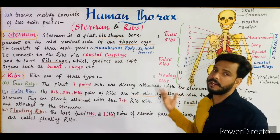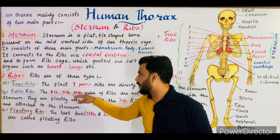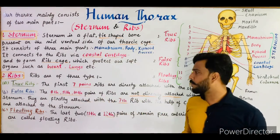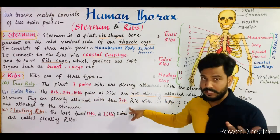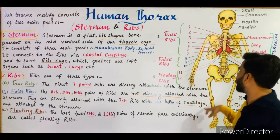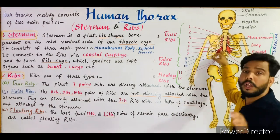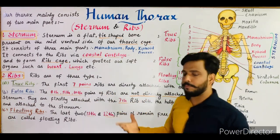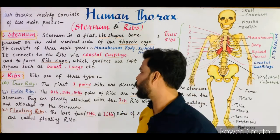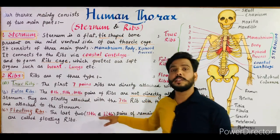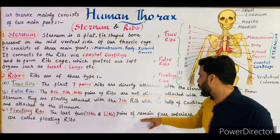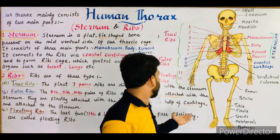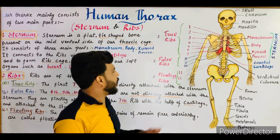To summarize: true ribs — the first seven pairs are directly attached with the sternum. False ribs — the eighth, ninth, and tenth pairs are not directly attached with the sternum; they are firstly attached with the seventh ribs with the help of costal cartilage, as shown in red in this diagram, and then finally they attach to the sternum via the seventh pair of ribs. Floating ribs — the last two pairs, eleven and twelve, remain free anteriorly and are called floating ribs.